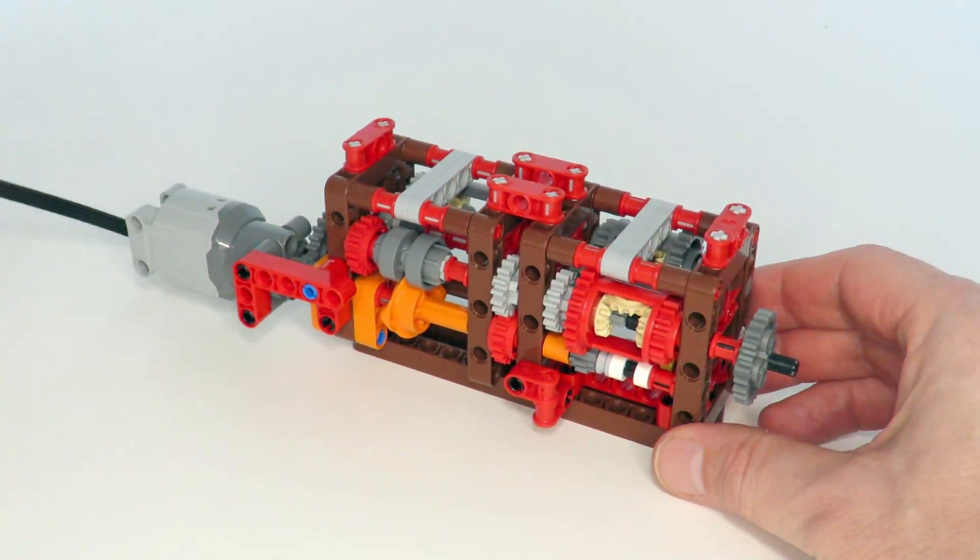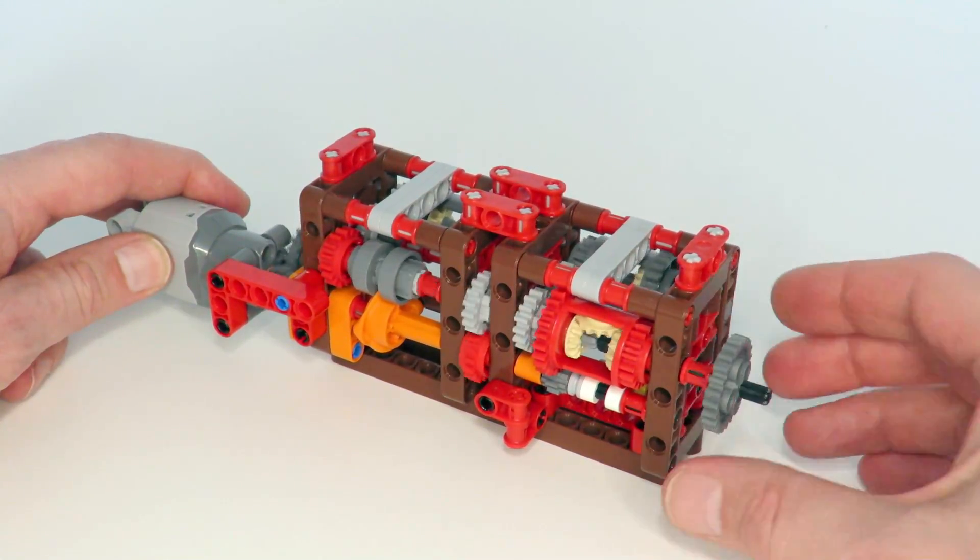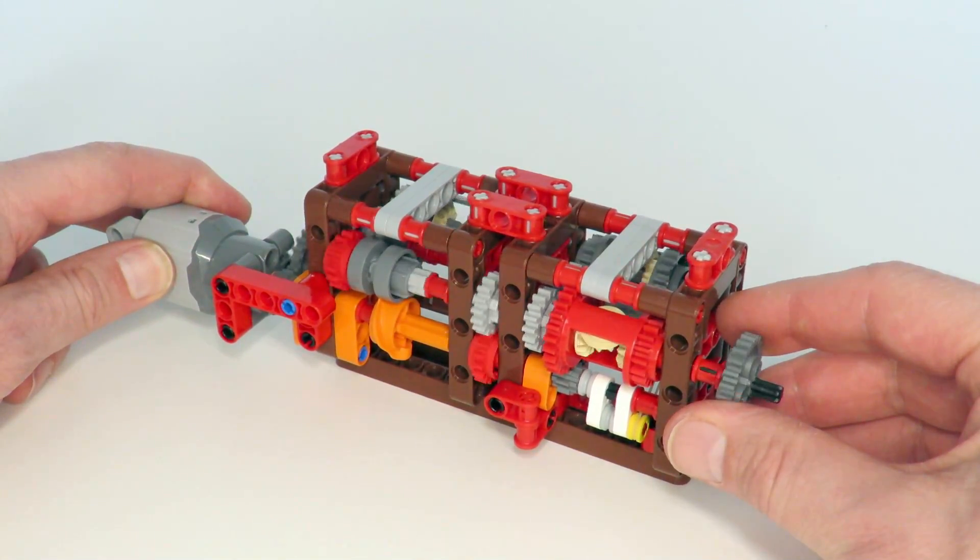Okay, so I'll just show you this gearbox in action. Let's turn it on. As you can see the output there is rotating slowly. As I load the output, it'll switch to a lower gear.